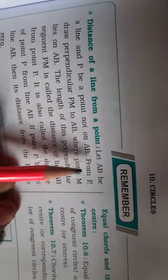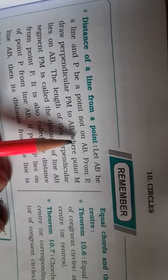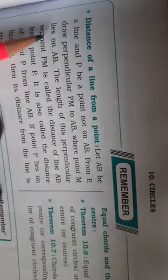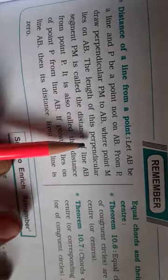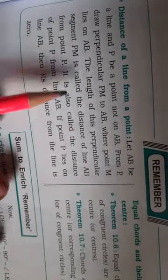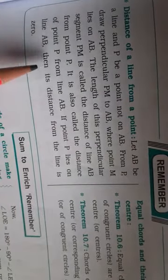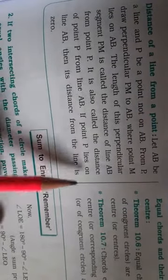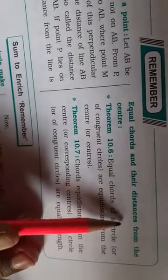Now let's see the remember section on distance of a line from a point. Let AB be a line and P be a point not on AB. From P, draw perpendicular PM to AB where point M lies on AB. The length of this perpendicular segment PM is called the distance of line AB from point P. It is also the distance of point P from line AB. If point P lies on AB, then the distance is zero.